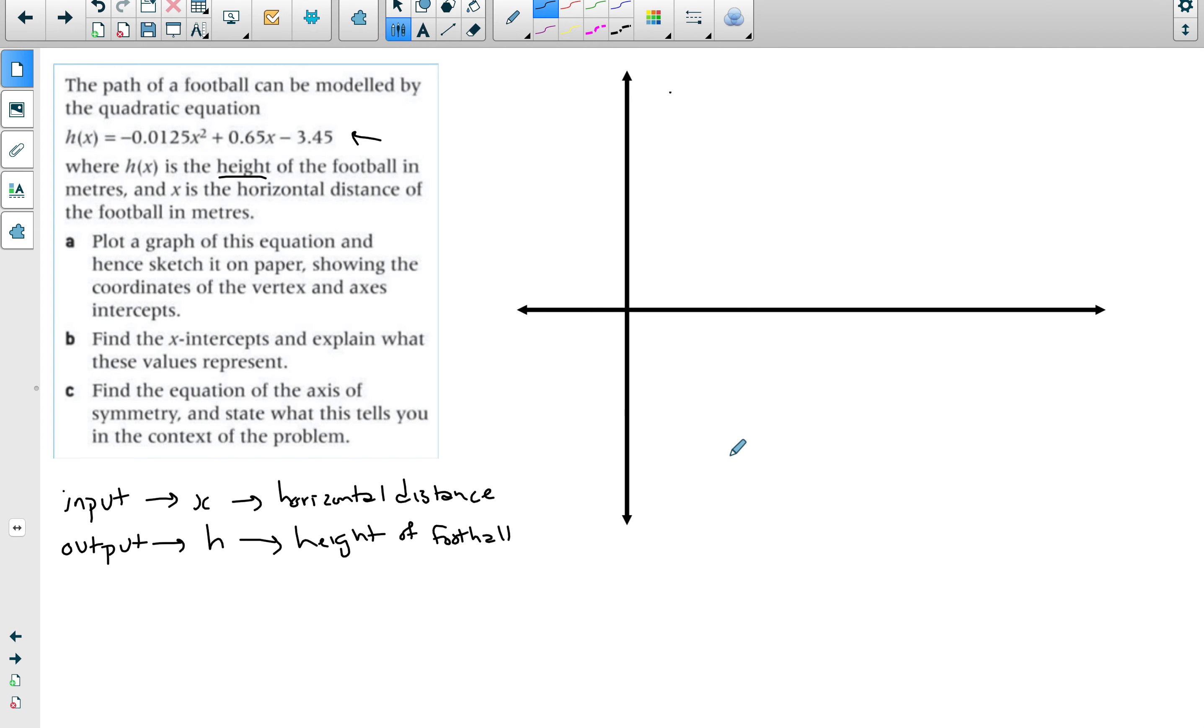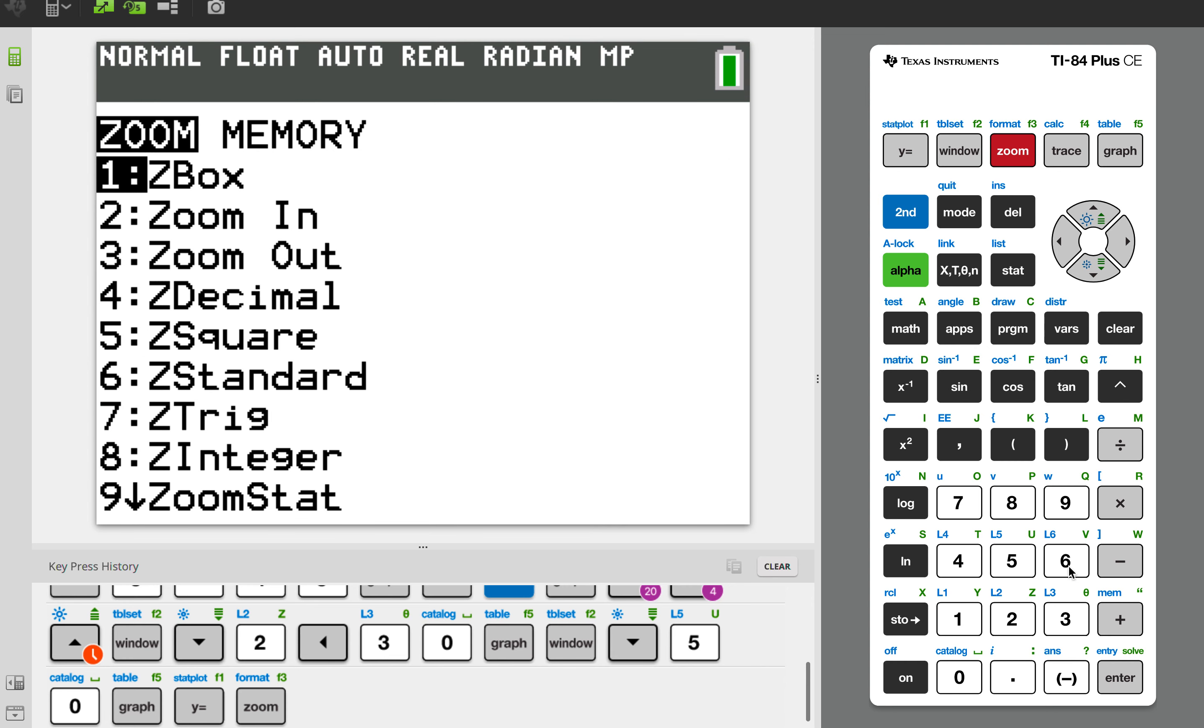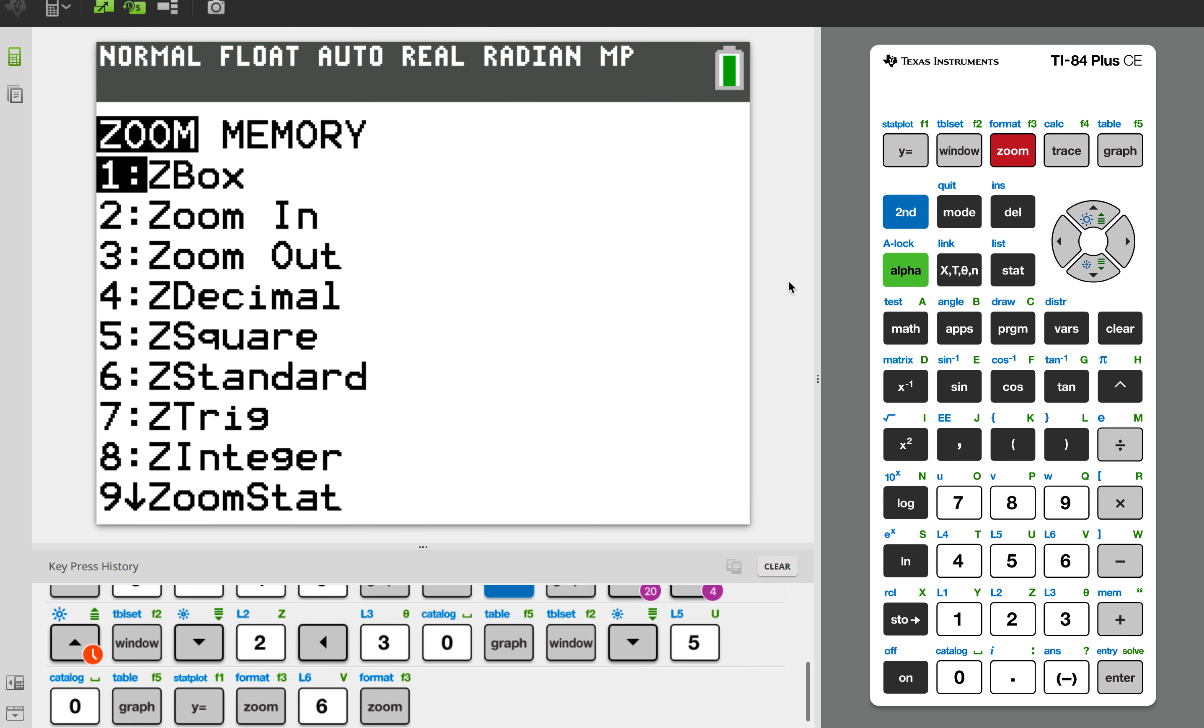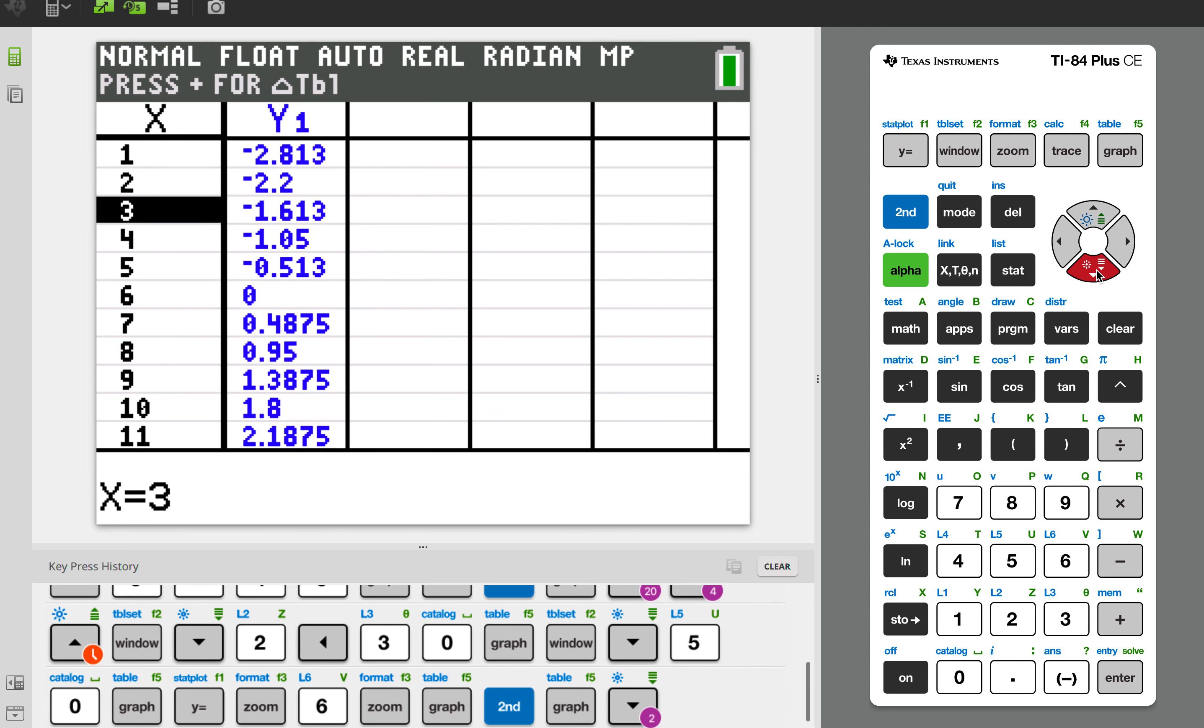From the path we can identify different properties. The first question is to plot this and sketch it on a paper and you need to show the coordinates of the vertex and the axis intercept. I've graphed it and the window is at standard, so I would recommend always going to zoom and then six. As you can see the graph kind of extends further. I can go to second table and see what type of values I'm getting.